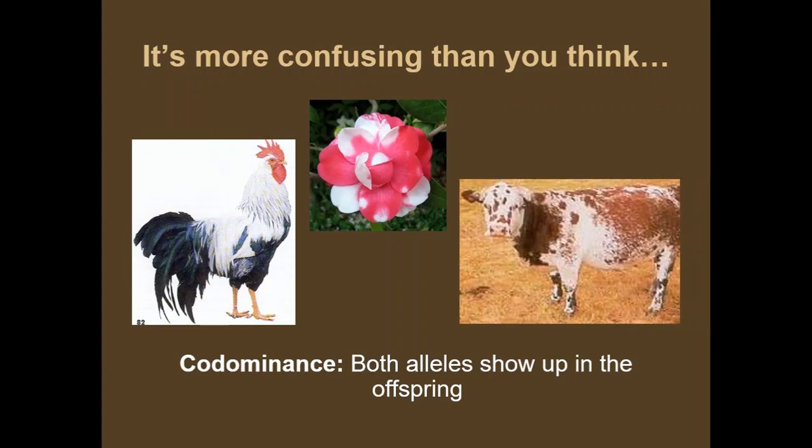Here's co-dominance in a cow where the alleles represent brown and white. Those Punnett squares are a little bit different — we work them the same, but we just read them differently.